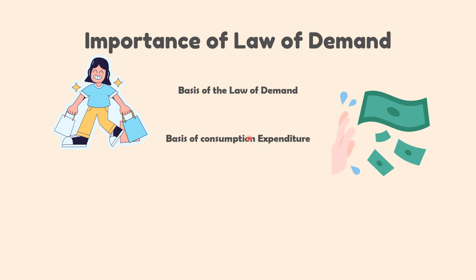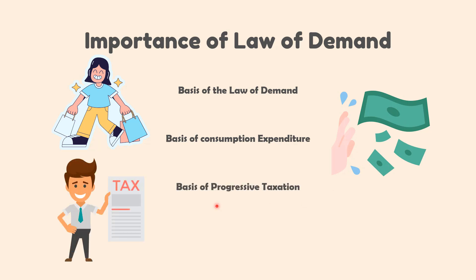Number two, basis of consumption expenditure. The law of demand and the law of equi-marginal utility both provide the basis for how the consumer should spend his income on the purchase of various commodities. Number three, basis of progressive taxation. Progressive taxation is the system of taxation under which the rate of tax increases with the increase in income. This implies that the burden of tax is more on the rich than on the poor, and the basis of this is the law of demand.